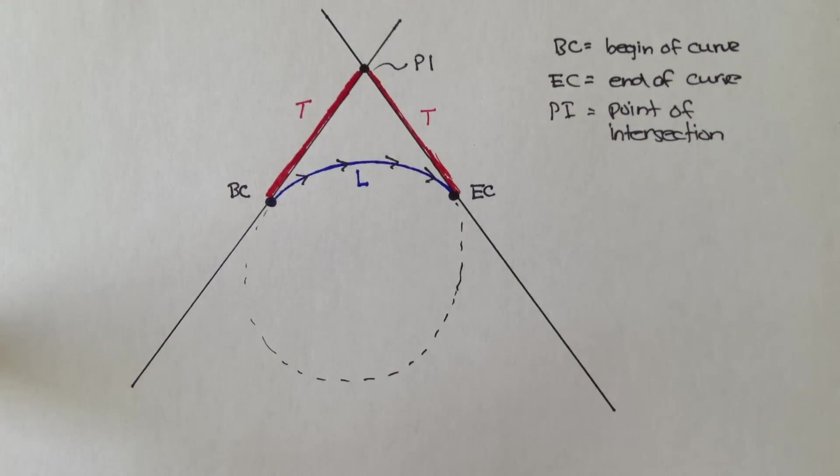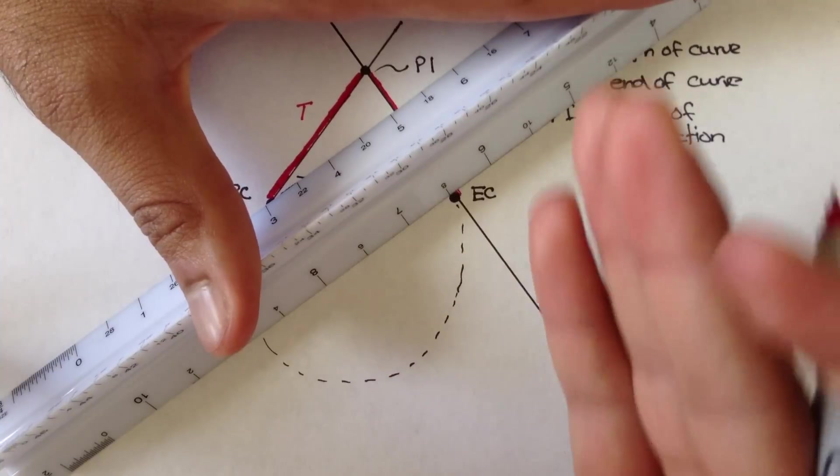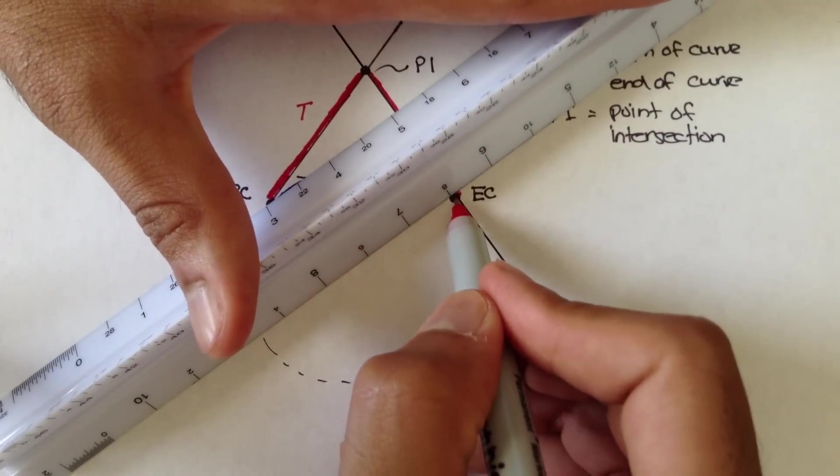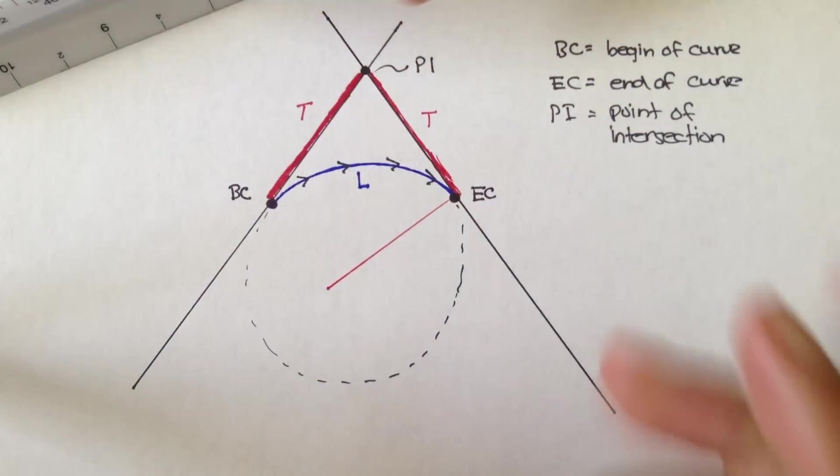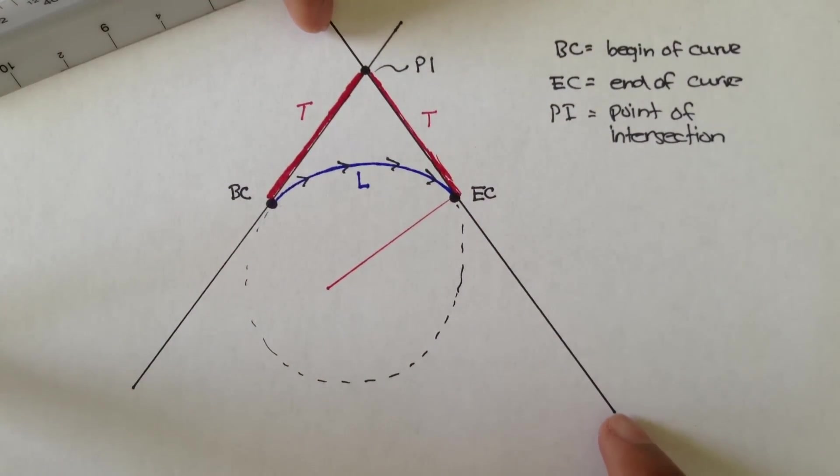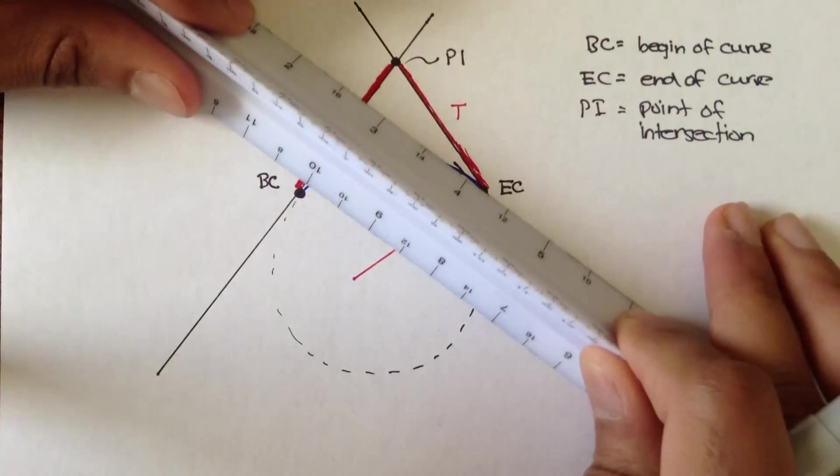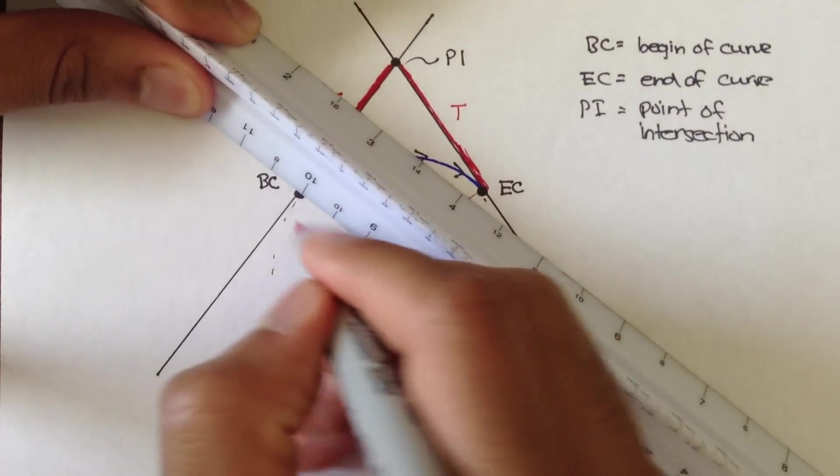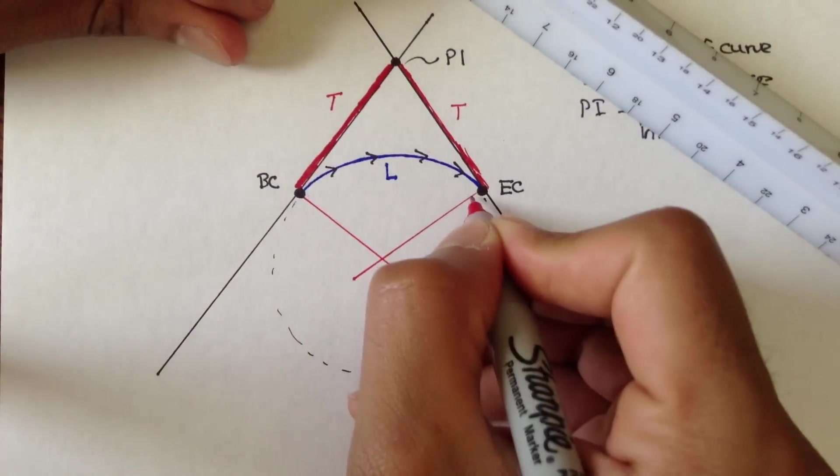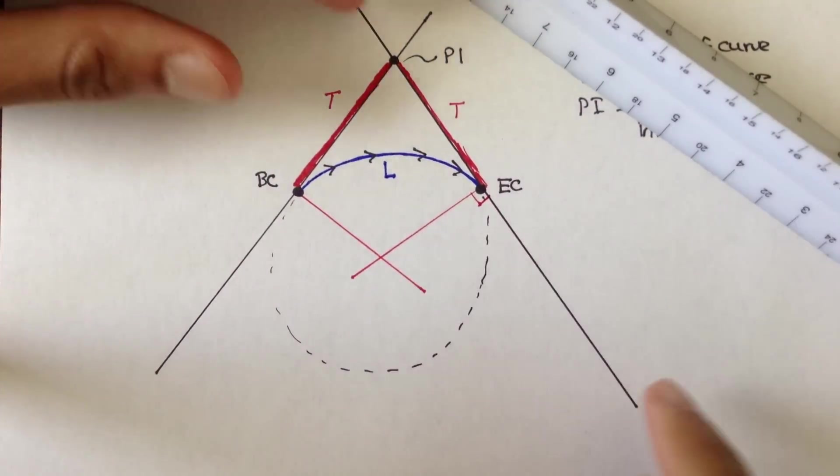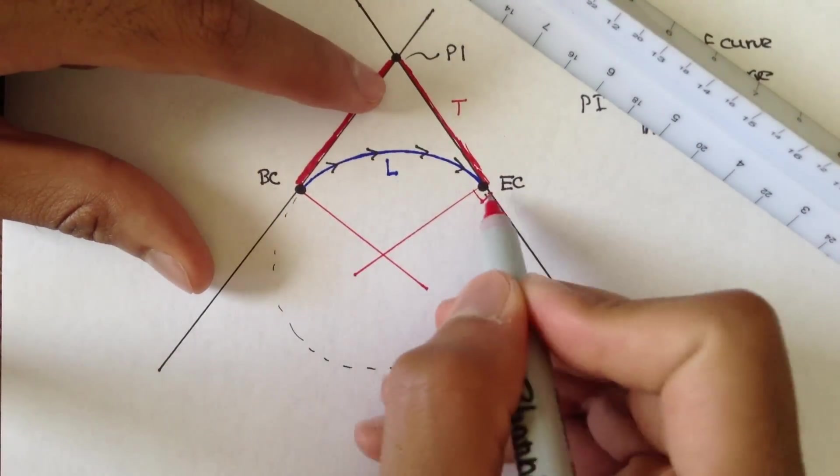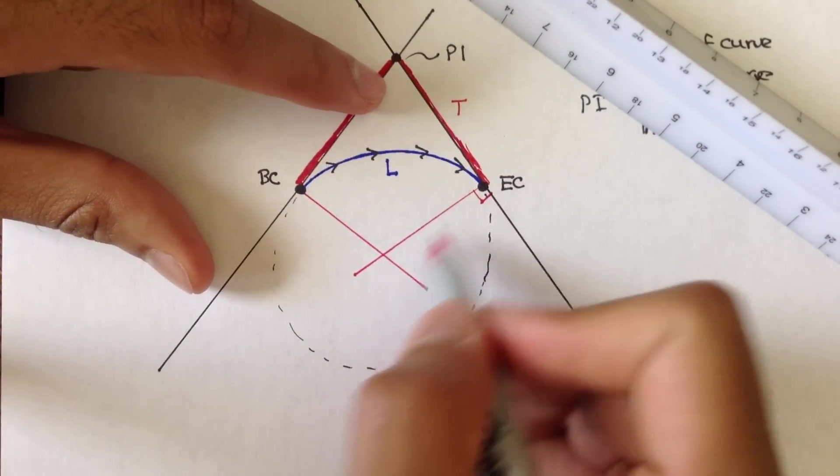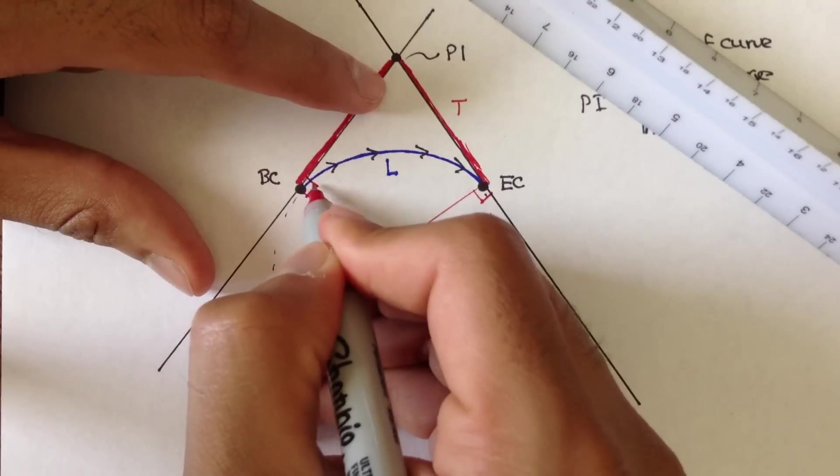Now, if we were to draw a line on the inside of the curve that's perpendicular to the tangent, the EC tangent, and a line perpendicular to the BC, so perpendicular meaning this EC tangent forms a perpendicular angle to this line, and same thing over here. This is 90 degrees.